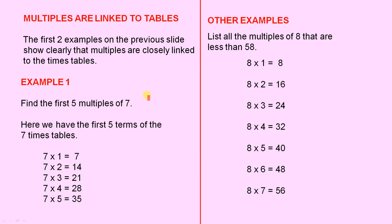Example 1. Find the first five multiples of 7. Here we have the first five terms of the 7 times tables. So here they are. 7 times 1 is 7.